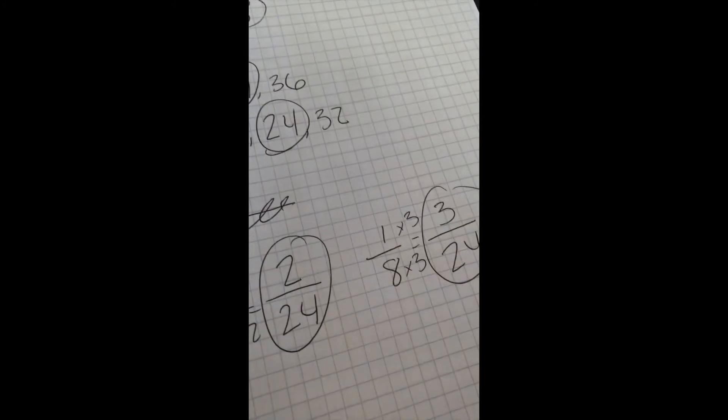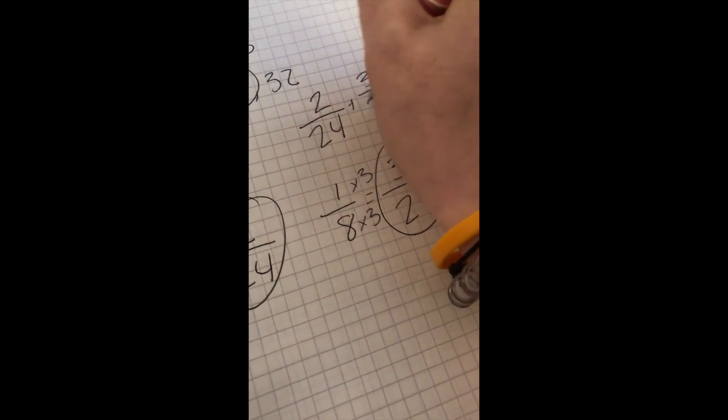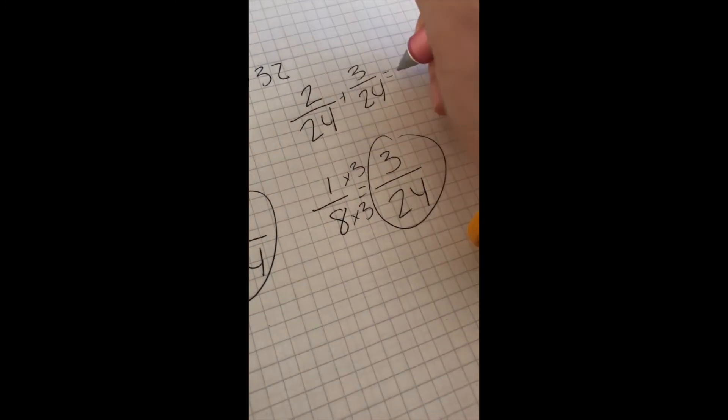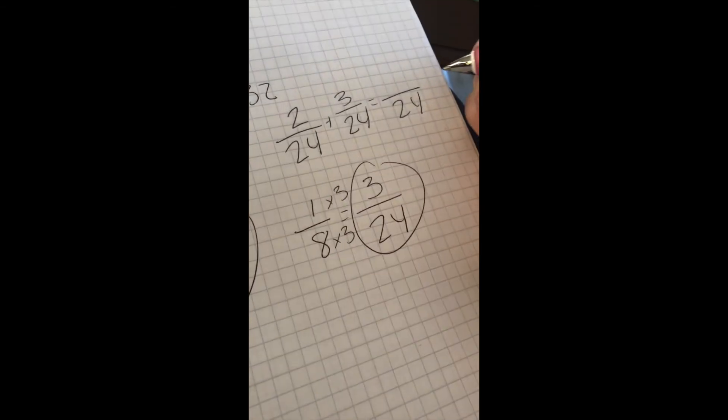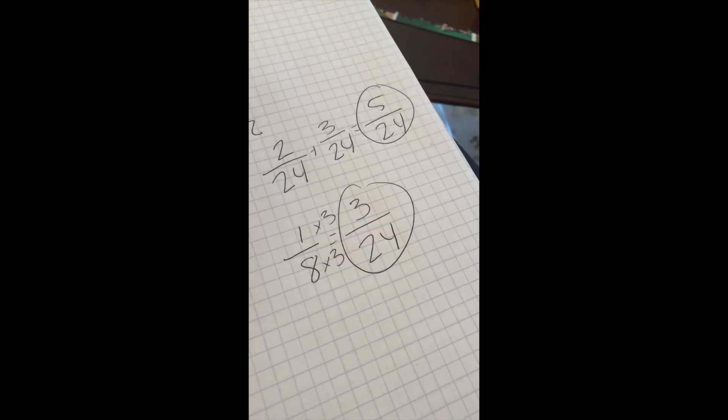So then I can now add these. So I'm doing 2 twenty-fourths plus 3 twenty-fourths. And that'll give me 24 as a denominator. And then 3 plus 2 is 5. So 5 twenty-fourths would be my final answer. Thank you.